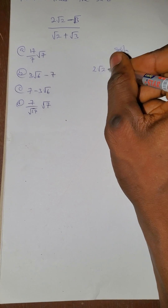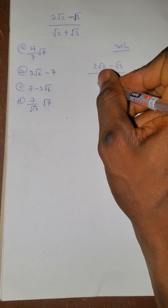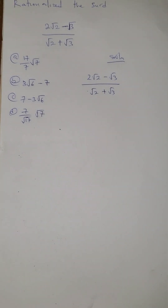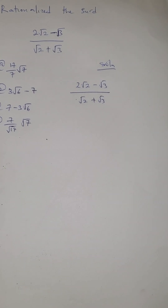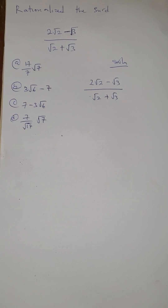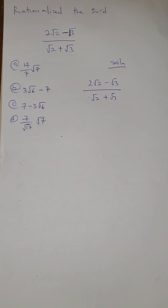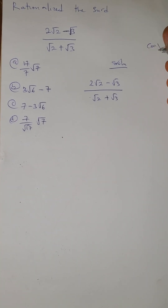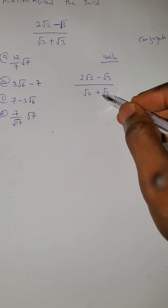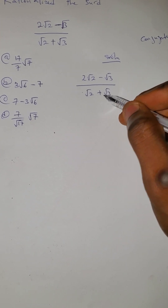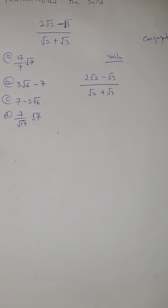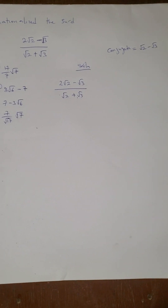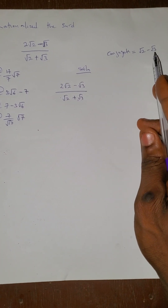We have 2√2 minus √3, all over √2 plus √3. You will have to multiply both the numerator and denominator by the denominator's conjugate. The conjugate is your denominator but with the opposite sign, so that will be √2 minus √3.